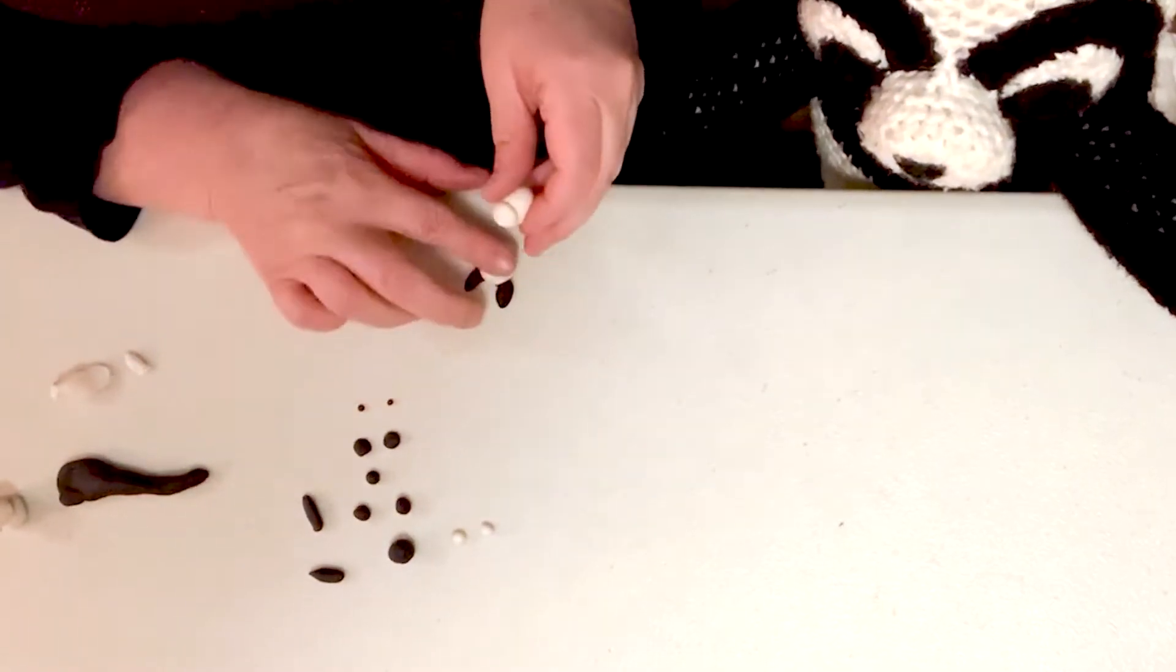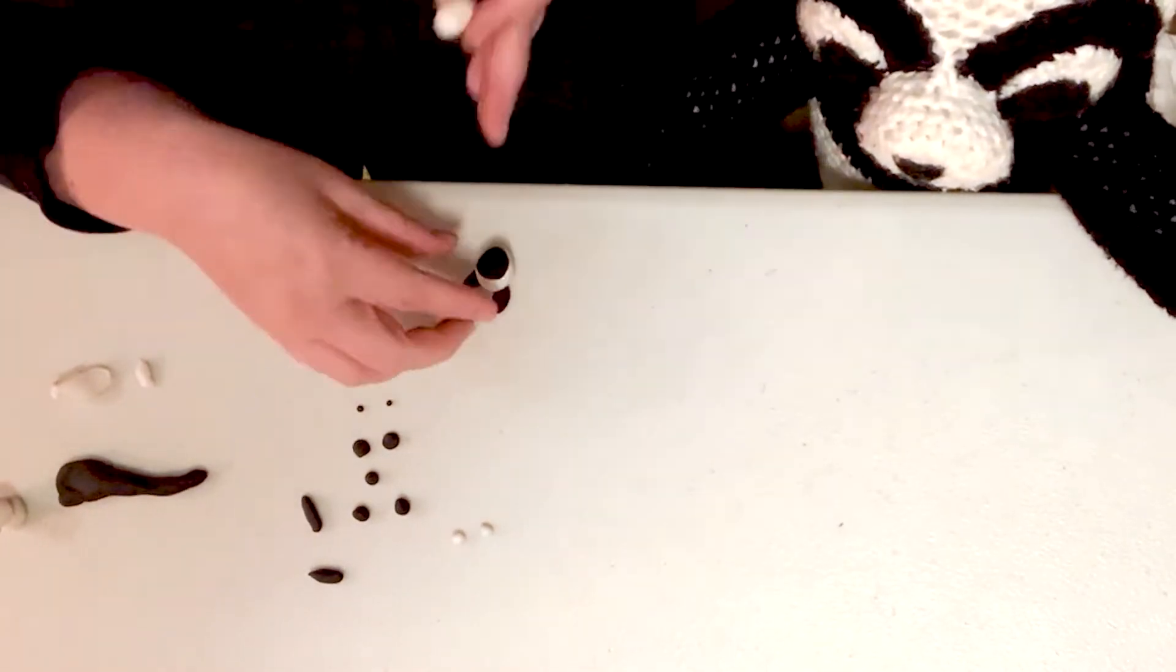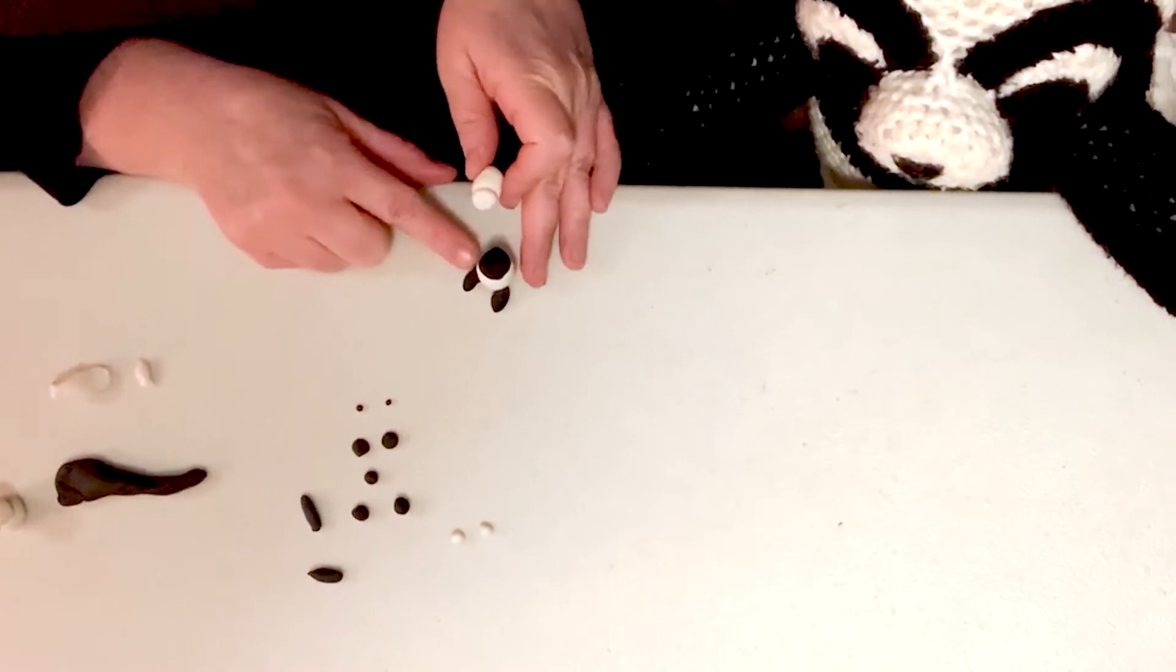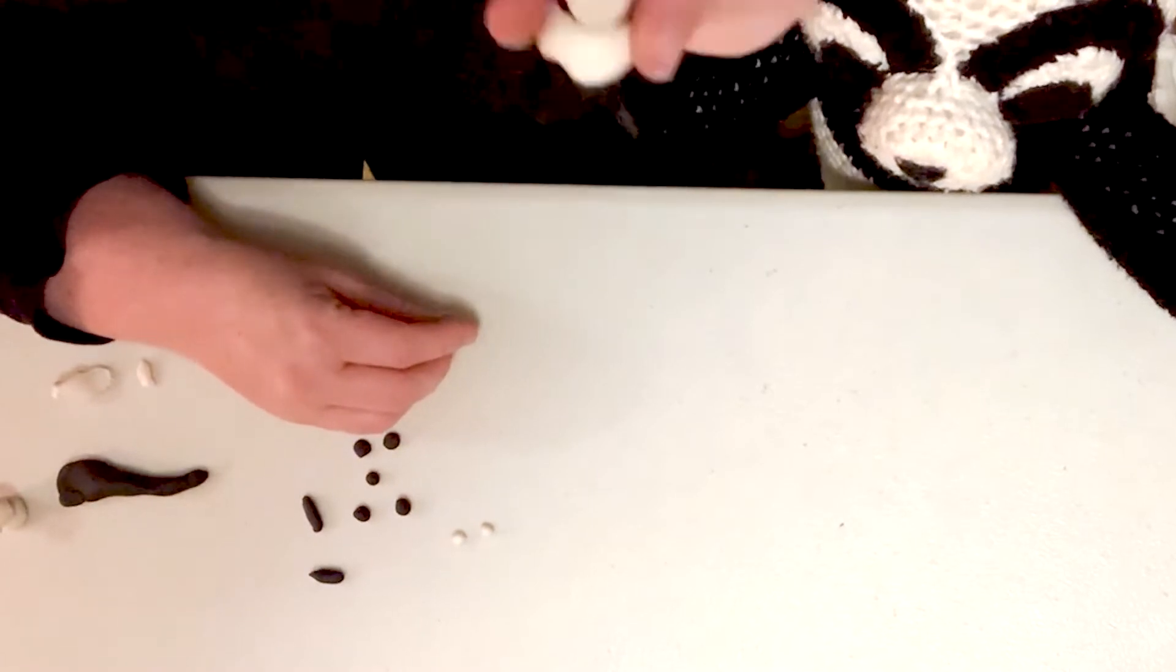Now, before we put the head on, we needed to put this black right here. Because see how Paisley has black on the top? So her body has black, white, black. And now we're putting the head on like this.